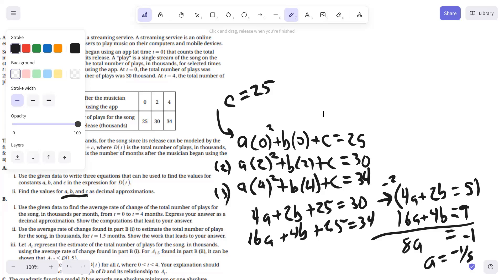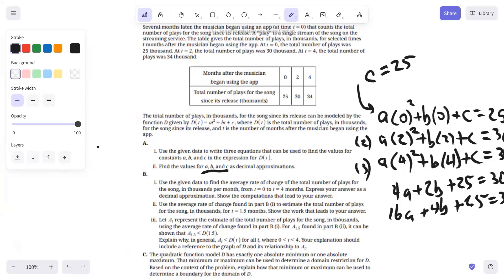Then from there, if A is negative 1 eighth, then I could go and plug this back into my equation right here. So I have 16 times negative 1 eighth plus 4B equals 9. 16 times negative 1 eighth is negative 2 plus 4B equals 9. So 4B equals 11, and B equals 11 fourths. So what we would have is A equals negative 0.125, B equals 2.75, and C equals 25.